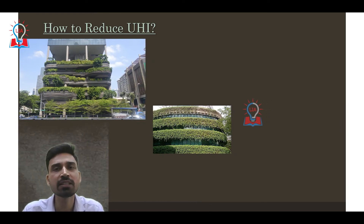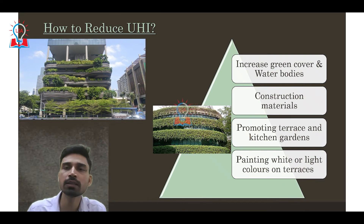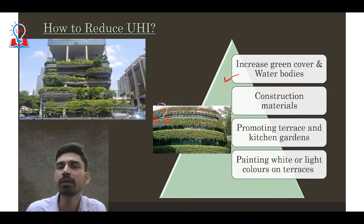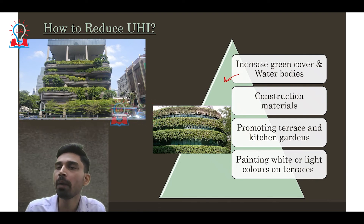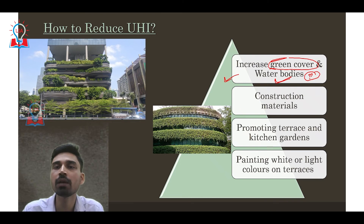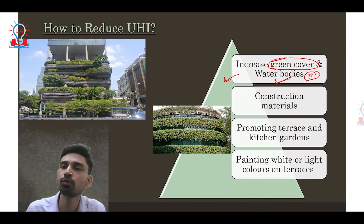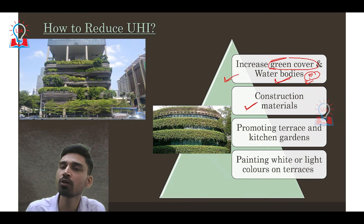Having discussed the causes of the urban heat island effect, how can we reduce it? It is not rocket science — we can reduce it by reducing the heat absorption capacity of urban areas. We can do this by increasing green cover in urban areas and by increasing the number of water bodies. This is becoming a big problem in India, as large numbers of water bodies and lakes in major metropolitan cities are being continuously encroached upon for construction and development of new buildings.